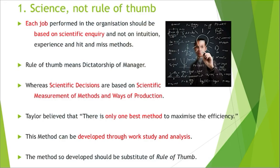For example, in an organization, if a manager decides the standard time for a particular job based on his past experience or trial-and-error methods, that is called rule of thumb. Taylor insists that standard time for any job should be decided scientifically — that is, on the basis of observations and experiments, which we will learn later in Techniques of Scientific Management. The daily target should be fixed on that scientific basis.